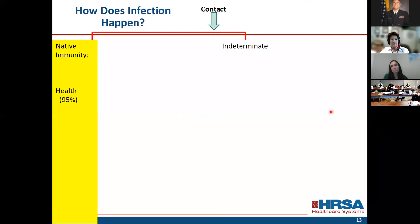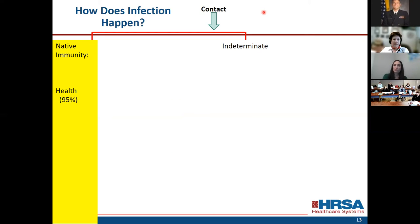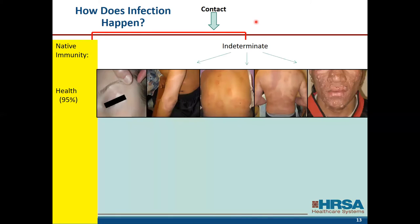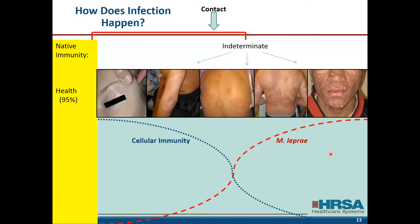How does the infection happen? A susceptible host has to come in contact with the bacteria. We used to ask patients if they touched armadillos, but 90% of our patients don't touch armadillos — they live in areas where armadillos are abundant, especially in central Florida, going around at night because they're nocturnal. When you have a susceptible host, the disease will look different in different patients — everything depends on your own cellular immunity. The better immunity, the less disease. This is the spectrum of leprosy described by Ridley and Jopling, ranging from polar tuberculoid disease to lepromatous — the more bacteria, the less cellular immunity.